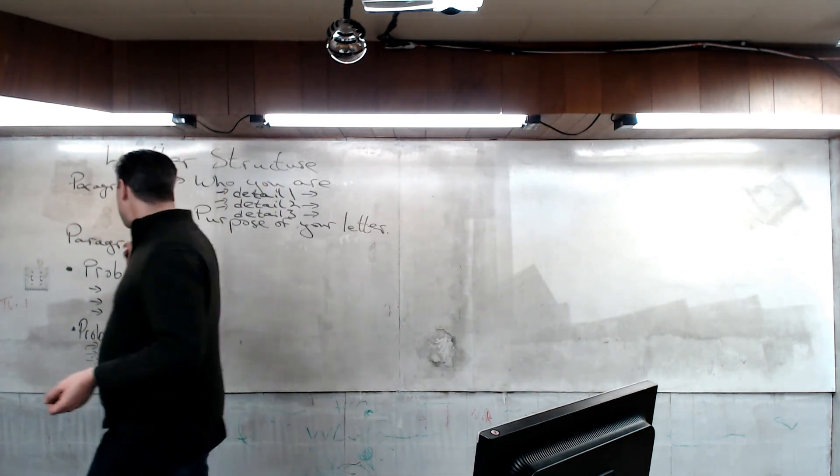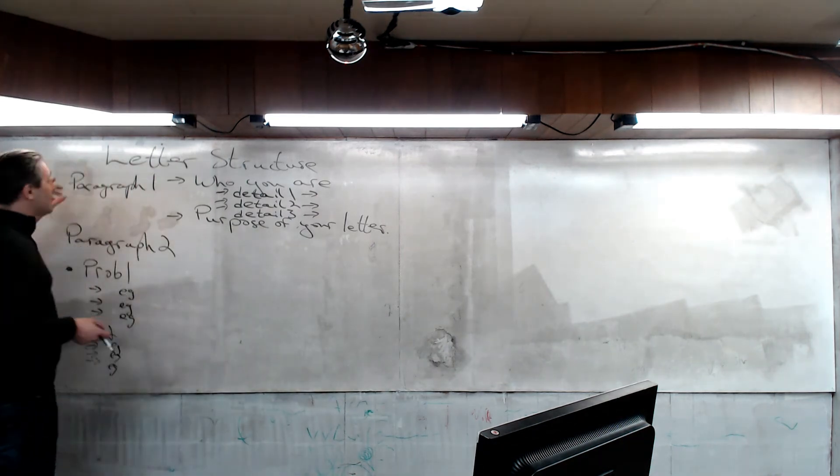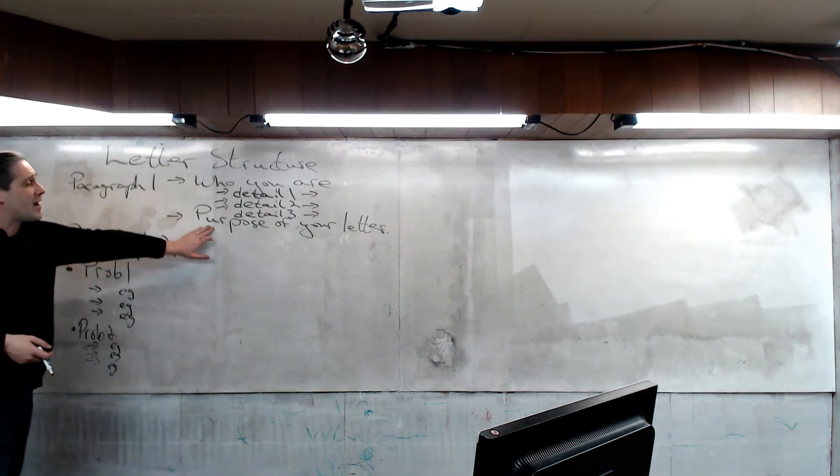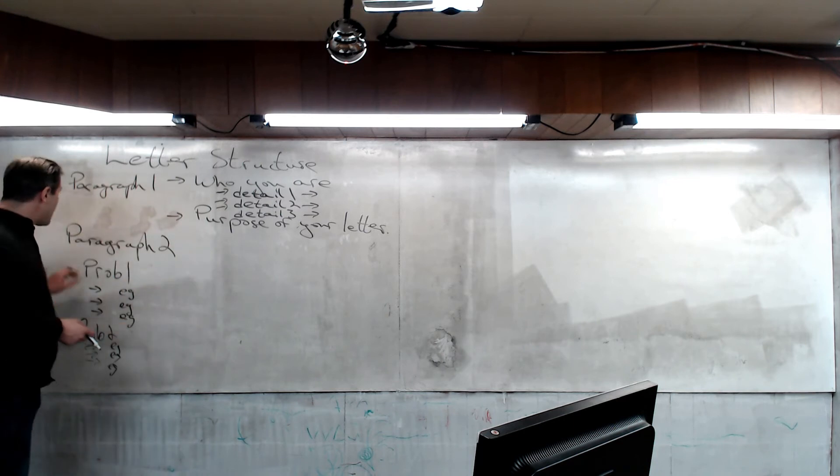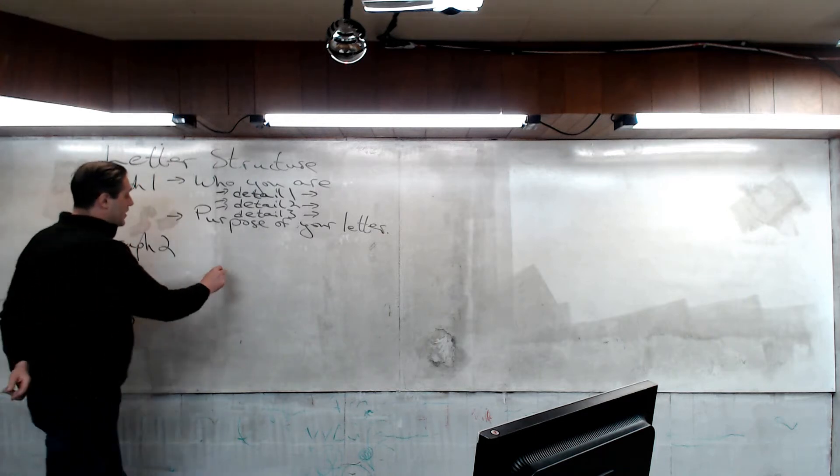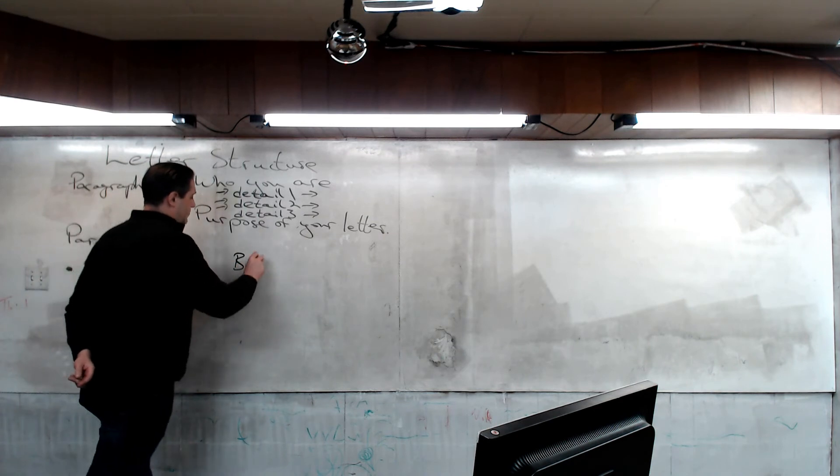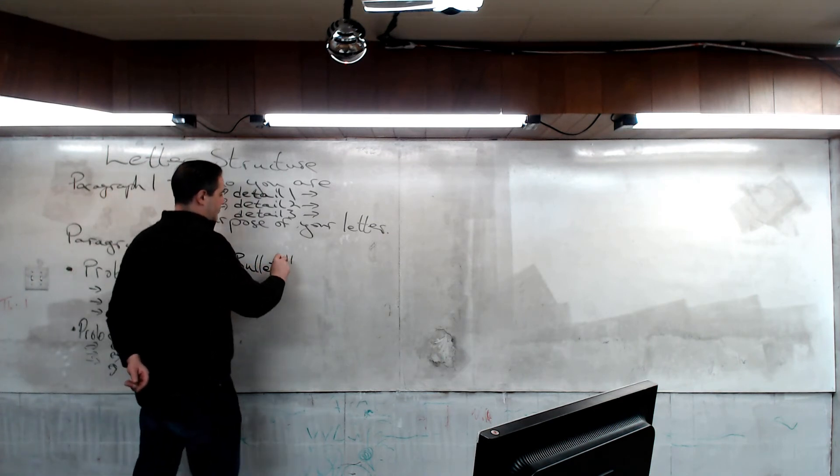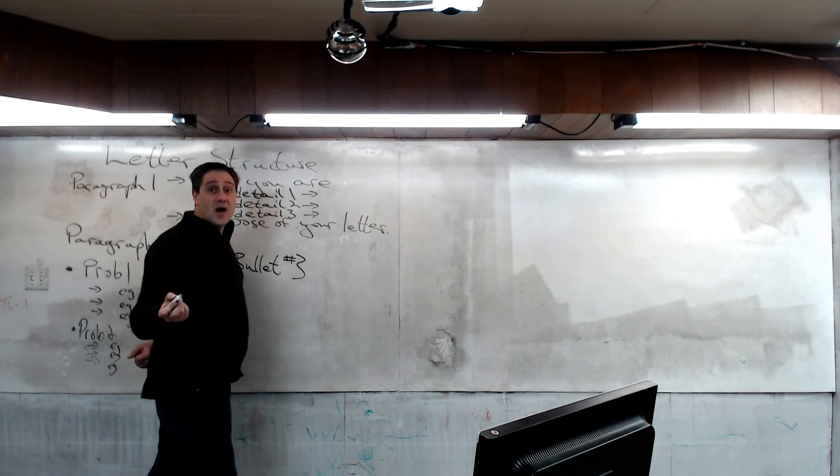And so you need a wide range of ideas to be able to use a wide range of English tools and then show your mastery or show your skill in using them. And so here we go again, back to this. You've got paragraph one, who you are and the purpose of your letter. Paragraph two, problems if you're writing a complaint letter. And then after this, you've got the third bullet point, which is about the future.